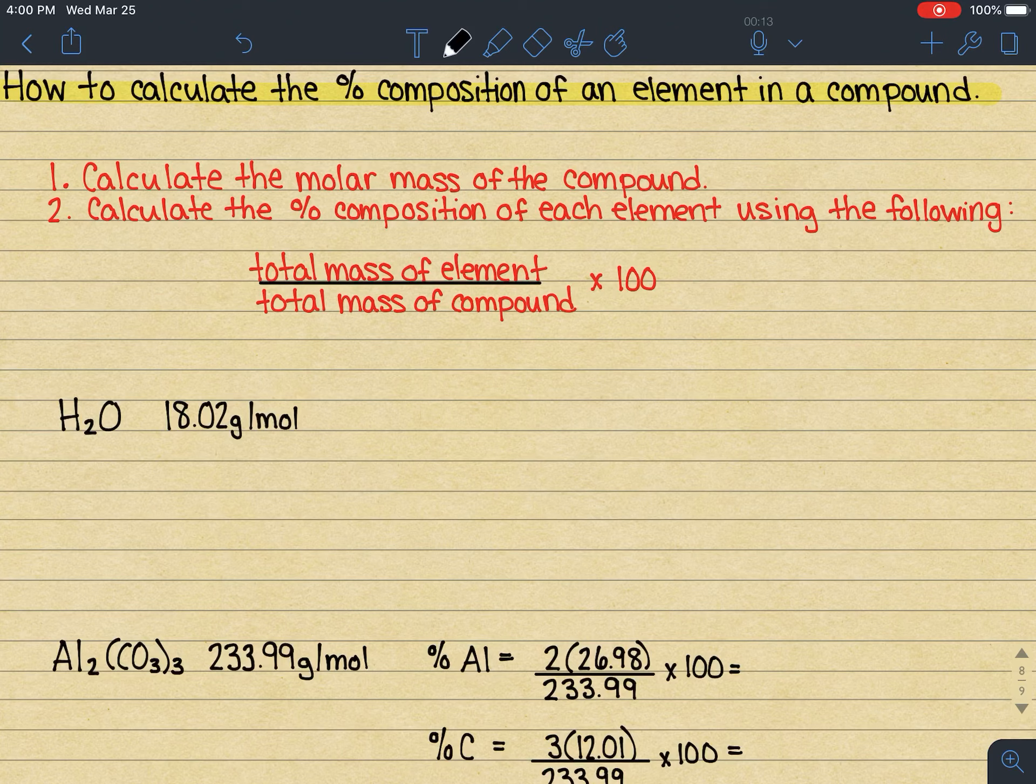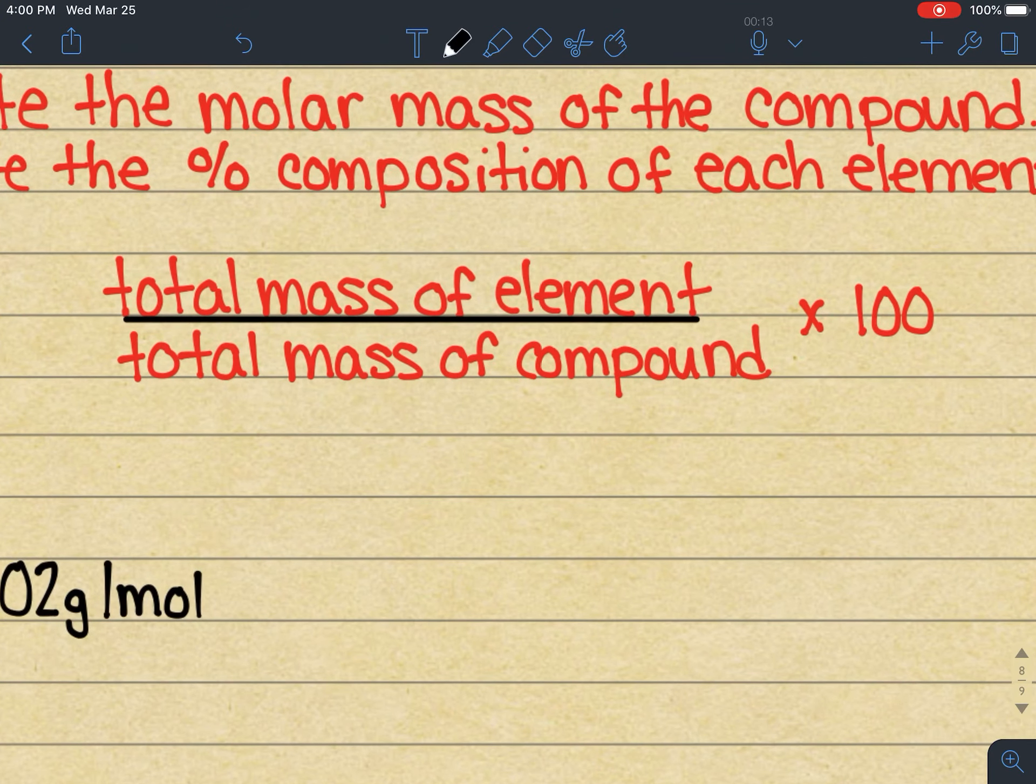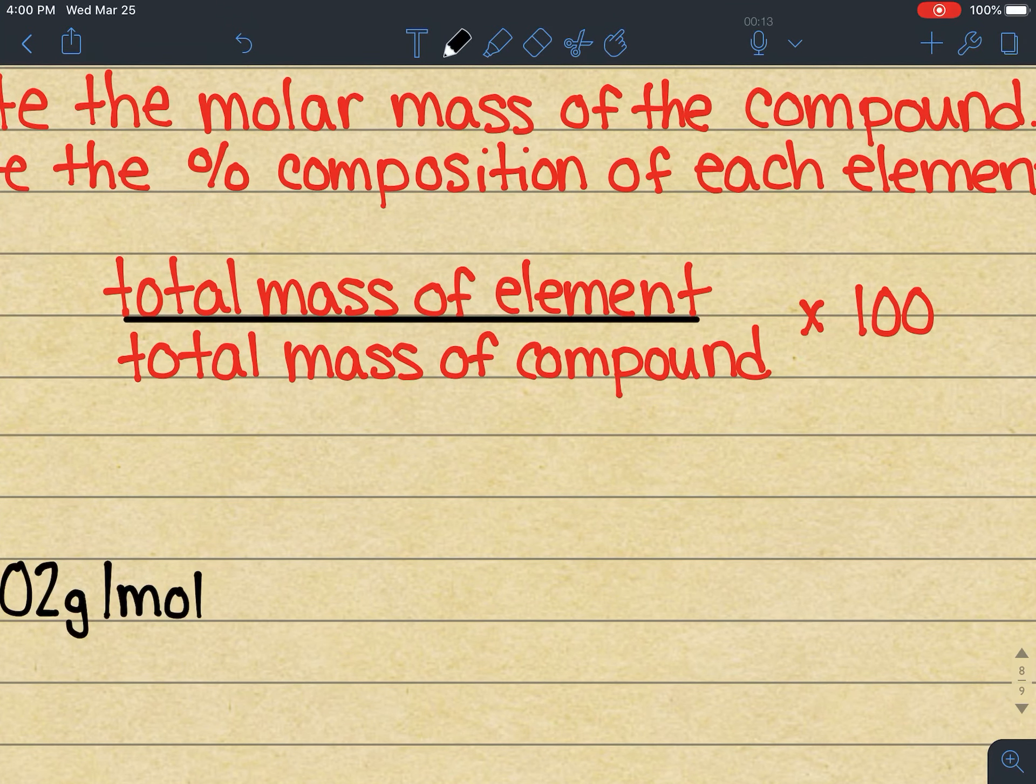All right, and then from there, you'll calculate the percent composition of each element using the following little equation here. So the first thing you want to do is take the total mass of the element in the compound. If there is more than one atom of an element in a compound, you will need to do a little bit of multiplication there, and then divide that by the total mass of the compound. Because this is a percent, you're going to take that fraction and multiply it by 100 and report your answer as a percentage.